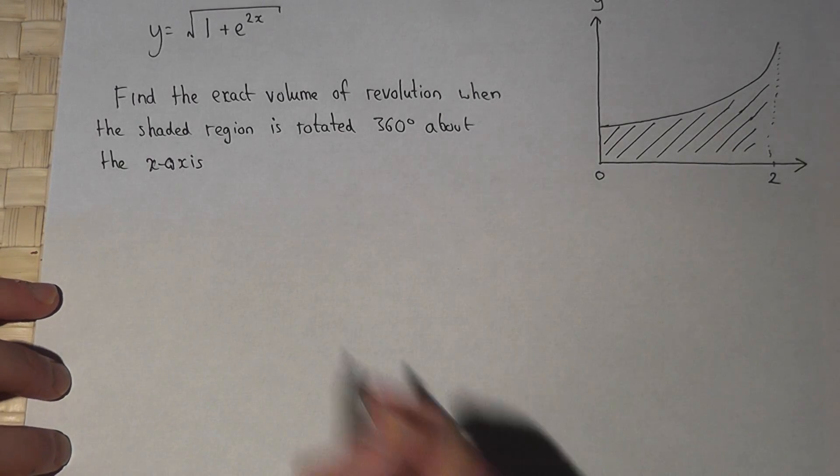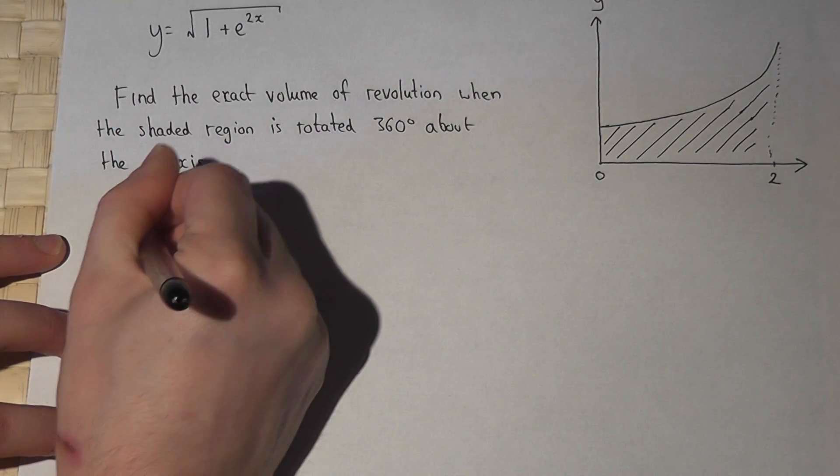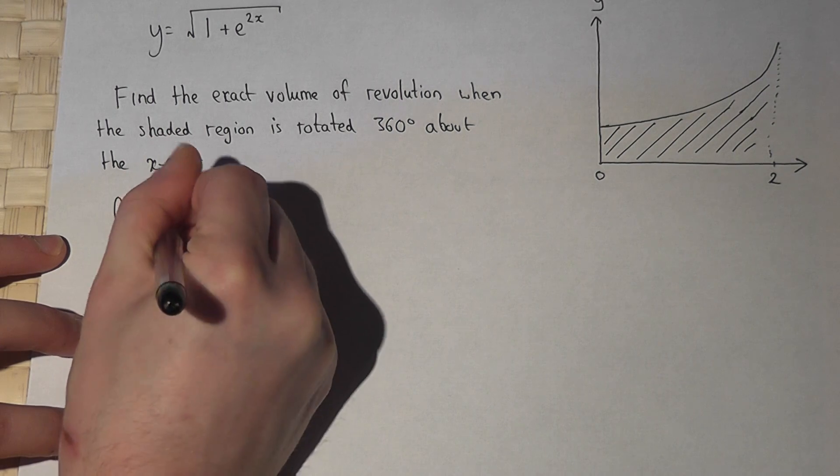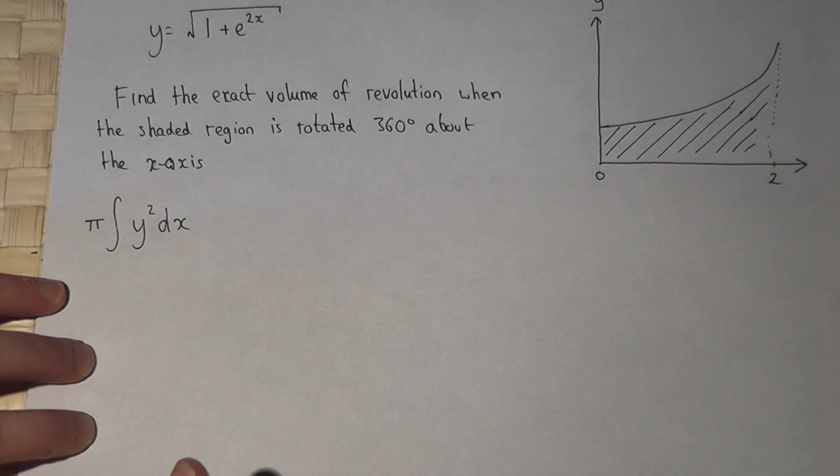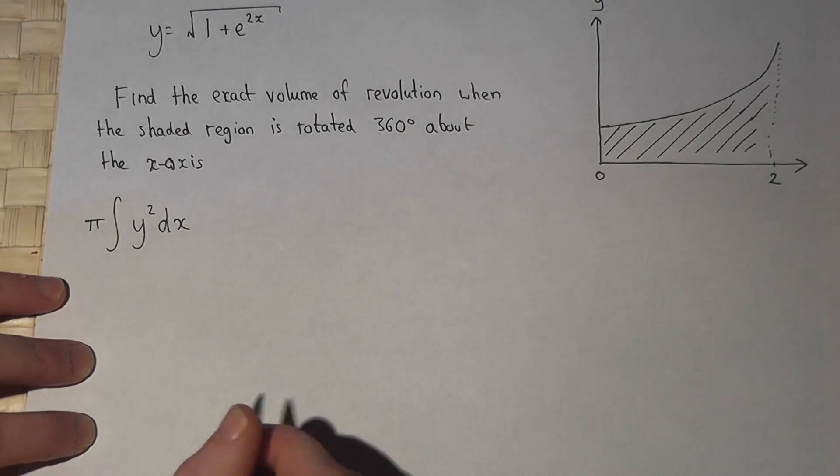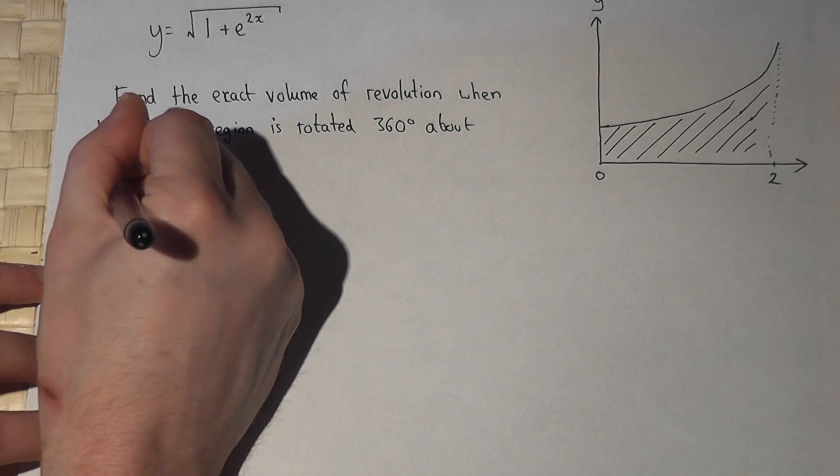Now there's a key formula for this, and the formula is integral of y squared dx times by pi between the two limits given, which in this case is 0 to 2.